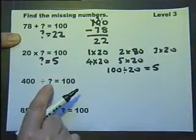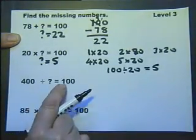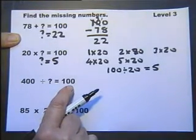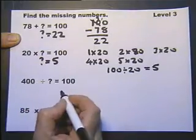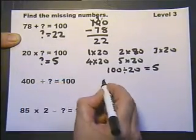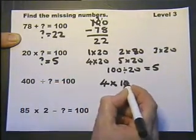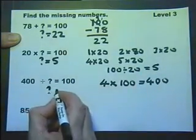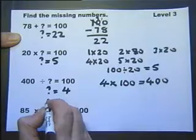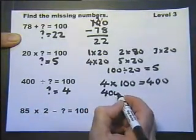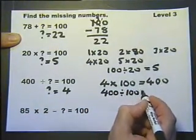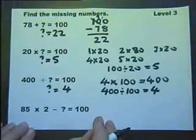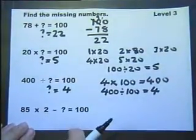400 divided by something is 100. We can do that by saying how many hundreds there are in 400, and in fact there are 4. 4 times 100 is 400, therefore the question mark is 4, because 400 divided by 100 gives us 4. As I say, these questions can be thought about in different ways — as long as you end up with the answer, that's okay.